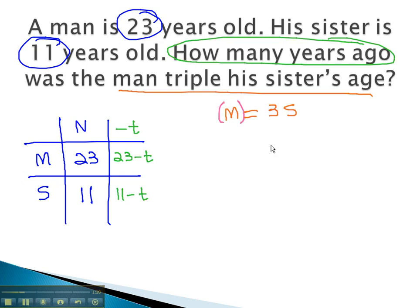With the equation, we can replace the man with what he was in the past. 23 minus t equals 3 times the sister. The sister is 11 minus t.